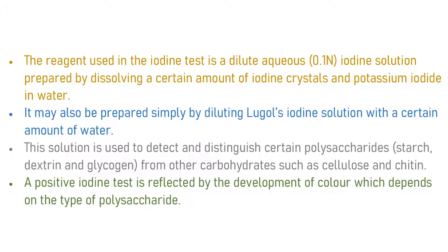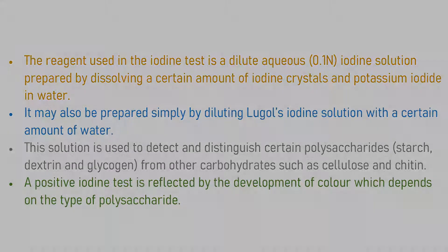This solution is used to test and distinguish certain polysaccharides from monosaccharides, disaccharides, and other polysaccharides such as cellulose and chitin. A positive iodine test is reflected by the development of a color which depends on the type of polysaccharide.